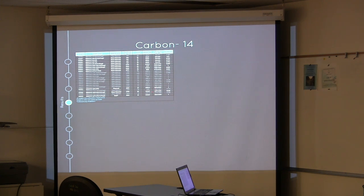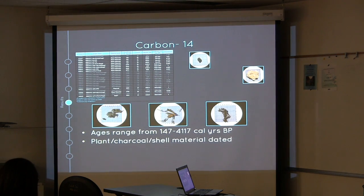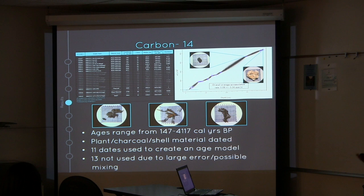For radiocarbon dating, the age range spanned from 147 to 4,117 calibrated years before present. We dated shells, charcoal, and plant material. We took 11 of these dates and incorporated them into an age model, while 13 dates were not used due to large error or possible mixing. The age model gave us an overall average accumulation rate of 0.8 plus or minus 0.04 millimeters per year.